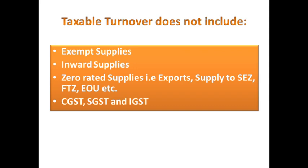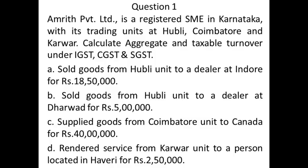Zero-rated supply means the tax on it is zero percent — there is no tax on that. That is why we should not take it under taxable turnover. Also, the GST amount itself should not be included in taxable turnover — only the bare value of supply made, not the value of any GST. So here I have one question. We will solve this sum to get a clear understanding of taxable turnover.